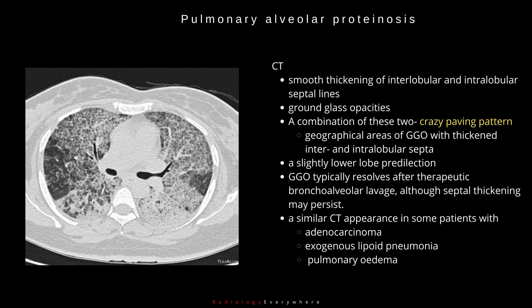On CT, two main features characterize HRCT: smooth thickening of interlobular and intralobular septal lines, and ground glass opacities. A combination of these two features is termed a crazy paving pattern — geographical areas of ground glass opacification with thickened inter- and intralobular septa. There is a slight lower lobe predilection. Ground glass opacity typically resolves after therapeutic bronchoalveolar lavage, although septal thickening may persist.